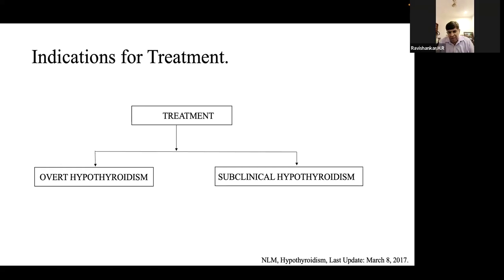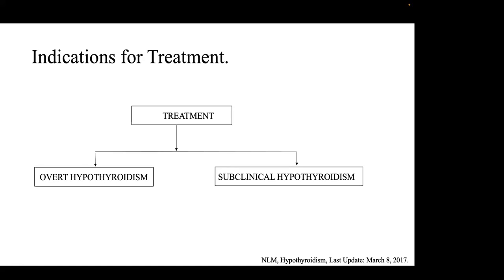Transient causes of raised TSH include postpartum thyroiditis, subacute thyroiditis, post-surgery, drug withdrawal, and pregnancy. In Hashimoto's thyroiditis, hypothyroidism is generally permanent and not transient. In subacute thyroiditis (e.g., viral), thyroid function usually recovers once the viral infection settles, making the hypothyroidism transient.